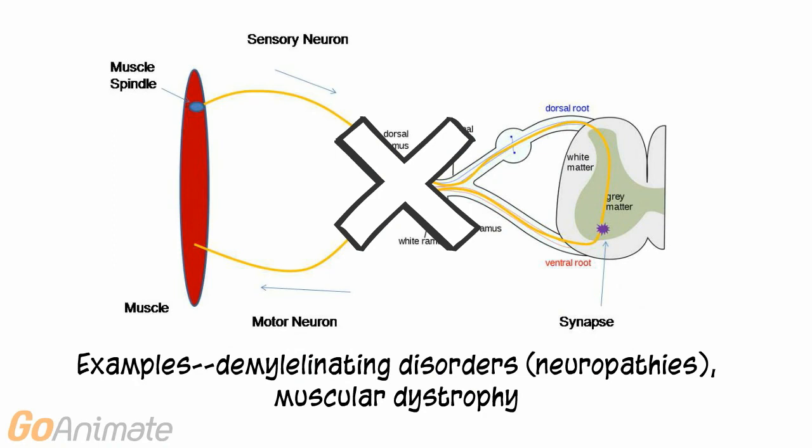Examples of conditions causing diminished reflexes include demyelinating disorders or neuropathies such as diabetic neuropathy, herniated discs, and carpal tunnel syndrome. Muscular dystrophy can also result in diminished reflexes.